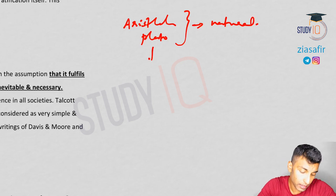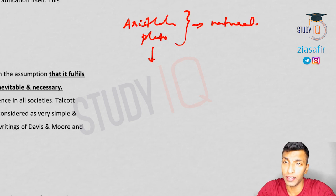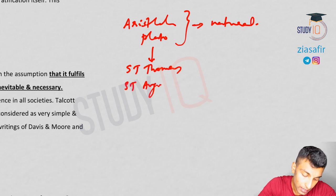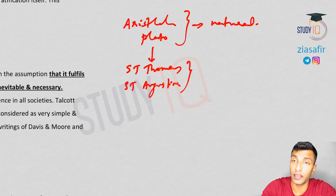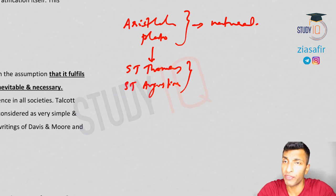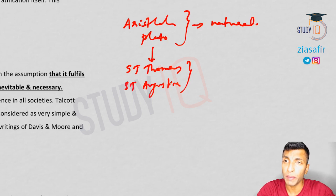Then later a social understanding started with the writings of St. Thomas and St. Augustine. They tried to understand social inequalities in terms of property, prestige, etc. So social understanding of inequality actually started. Apart from the naturalist understanding, a new school of thought emerged with these two people — they tried to understand inequality as something which is socially created.